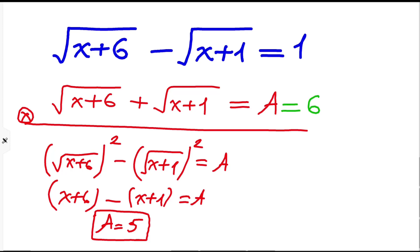Then adding these two equations, we will have two times square root of x plus six equal to... sorry, A is not six, A is five. So it's equal to one plus five, which is six. Dividing by two, we have square root of x plus six equal to three.